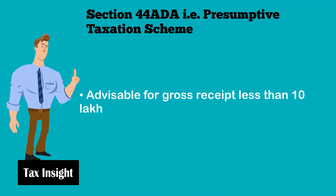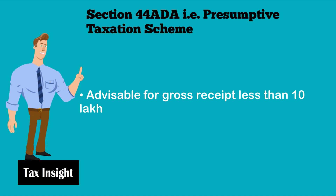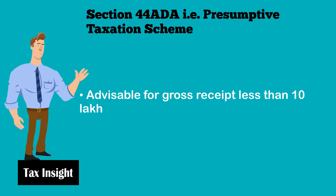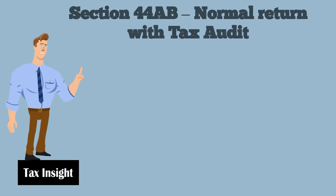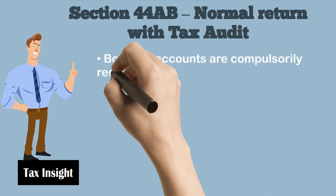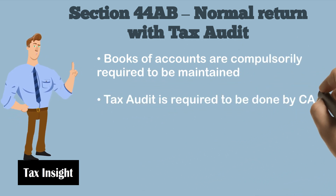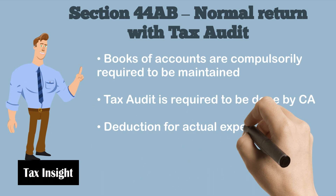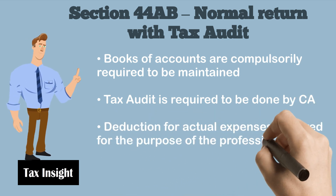This scheme is advisable for total receipt less than ₹10,00,000. If your income is more than this, then you should maintain the books of accounts and go under the normal scheme of taxation to reduce your tax liability. Under the normal scheme with tax audit under section 44AB, books of accounts are compulsorily required to be maintained, and a tax audit is required to be done by a practicing CA. Deductions for actual expenses are allowed.